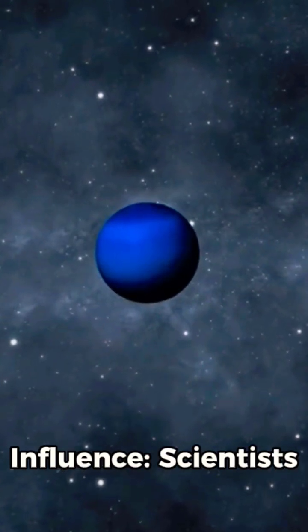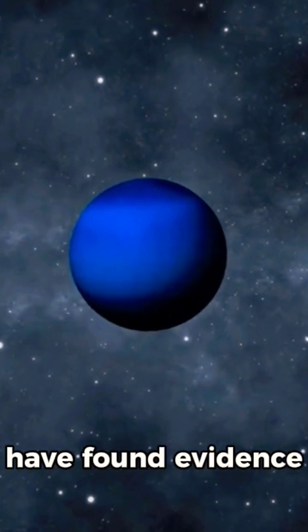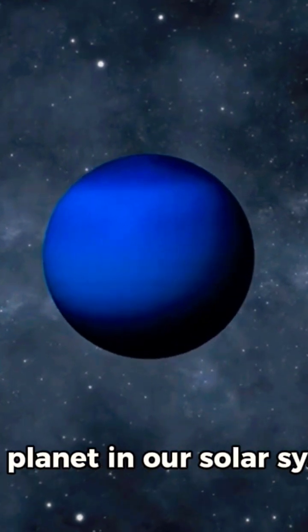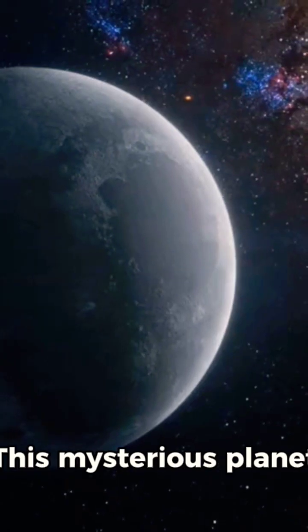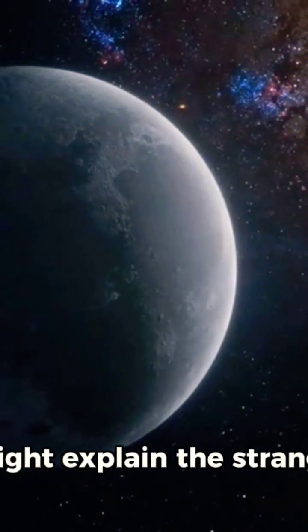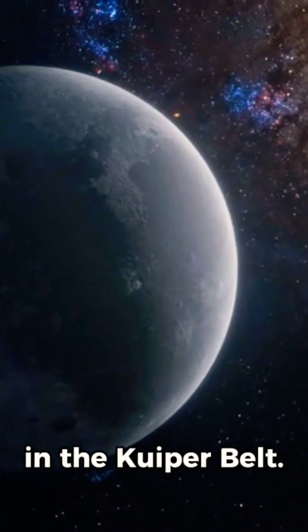One: Planet 9's influence. Scientists have found evidence suggesting a massive ninth planet in our solar system. This mysterious planet might explain the strange orbits of distant objects in the Kuiper Belt.